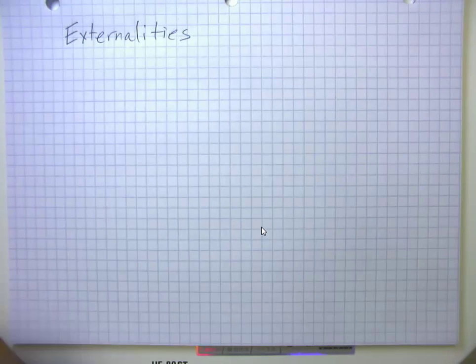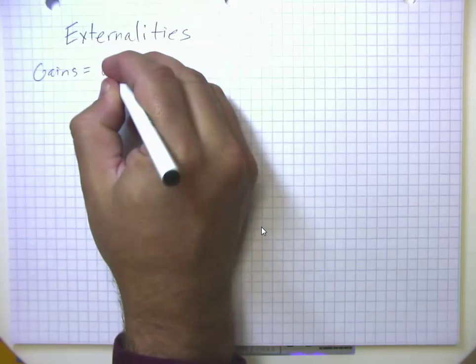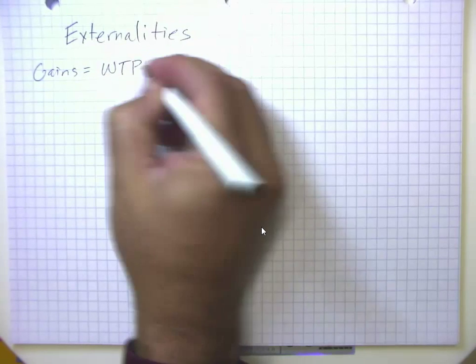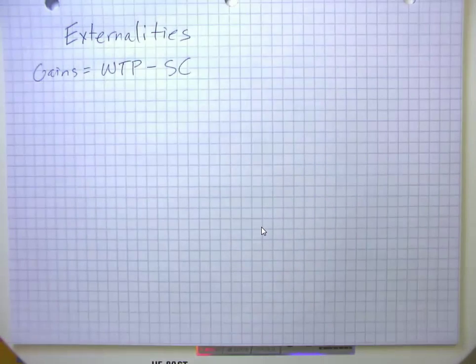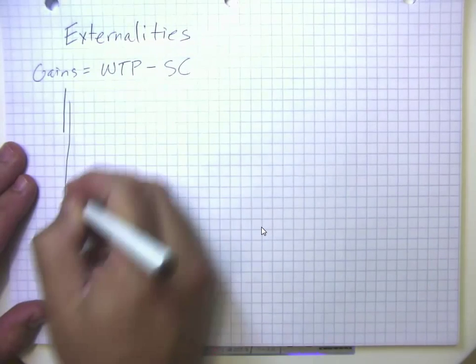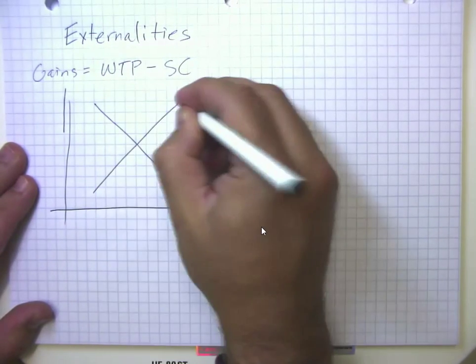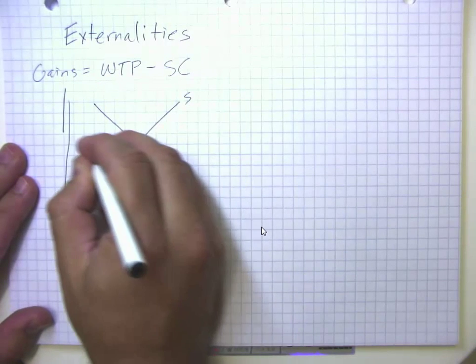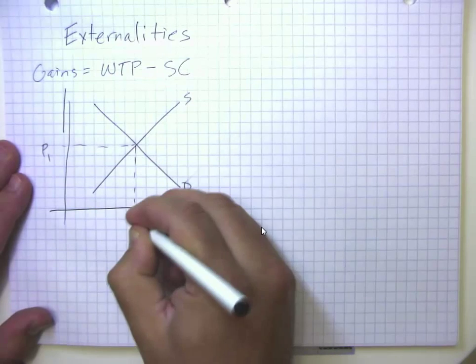So remember before, we looked at the gains from trade are going to be the buyer's willingness to pay minus the seller cost. And we looked at the market equilibrium with our demand and supply curve and our equilibrium price and our equilibrium quantity.